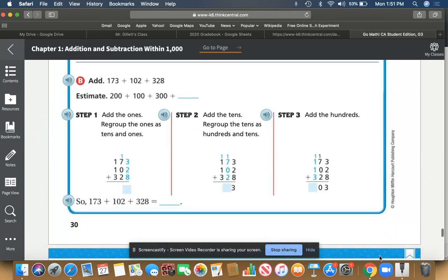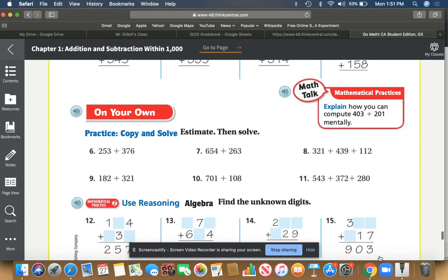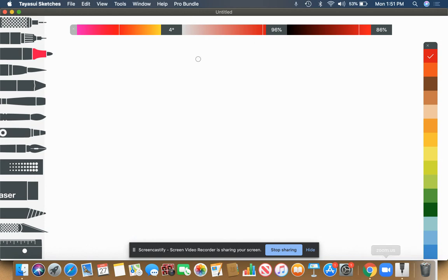Let's take a look at what they want us to do for these ones here on your own. Number six, 253 plus 376. So we have 253 plus 376.